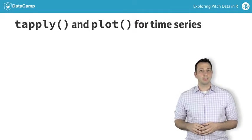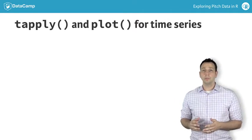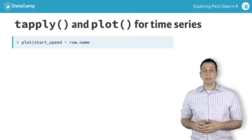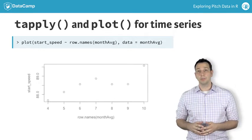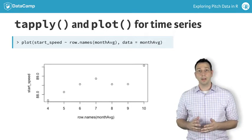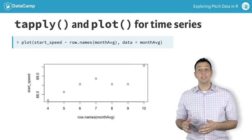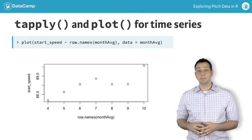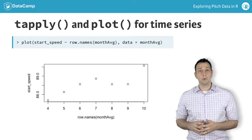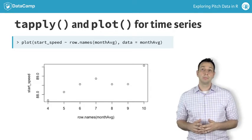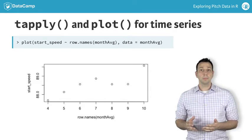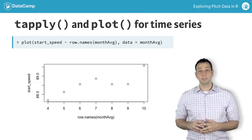In the upcoming exercises, you'll also use tapply in combination with the plot function to create a time series figure that shows the fastball velocity across each game in the season. Let's start by plotting a y variable, start speed, by an x variable, the month. You can see the points plotted here.